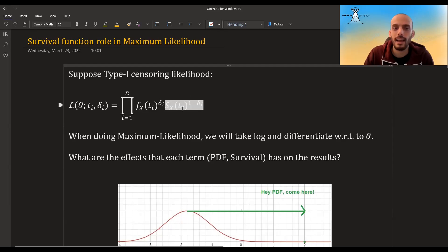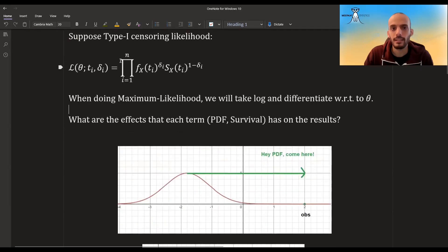And the question is, what is the effect that the survival function has on this optimization process? So if there wouldn't be any survival function, if there would only be the PDF function, the probability density function, then each point would kind of be pulling to where it's at. In the normal case, when we have a normal distribution, suppose this is the distribution, and then we have an observation here.